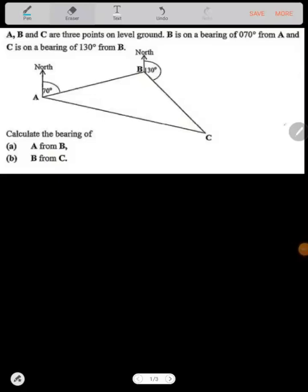Hello students, I hope you are doing fine. We've been looking at bearings. Let's do this example. It's a question from 2017 GCE paper 1. It says A, B, and C are three points on level ground. B is on a bearing of 070° from A.